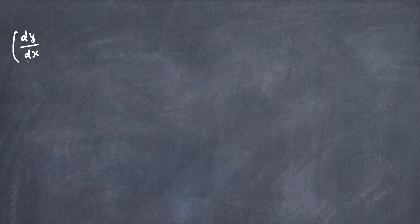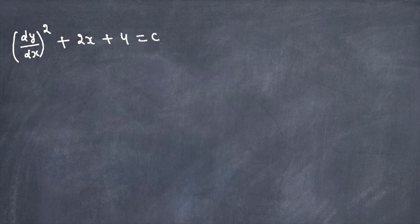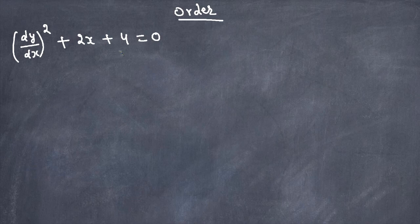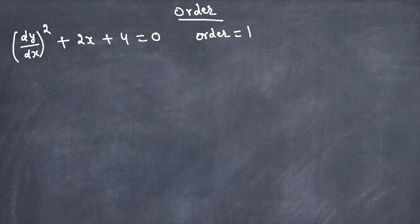First, let's write down a differential equation: dy/dx squared plus 2x plus 4 is equal to 0. We're going to talk about the order of a differential equation. By definition, the order is the highest differential coefficient — in simple terms, if it's a first derivative, order is 1.